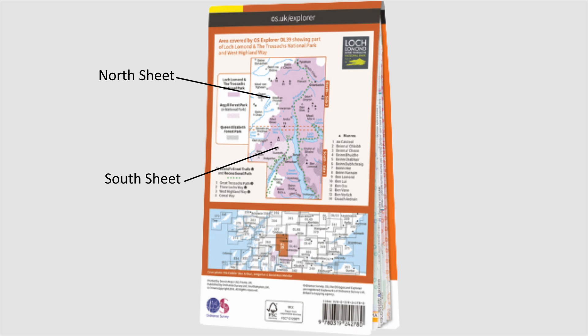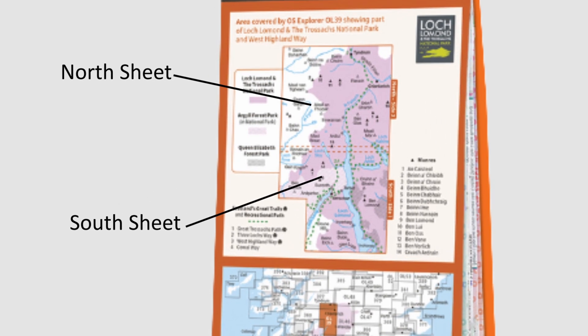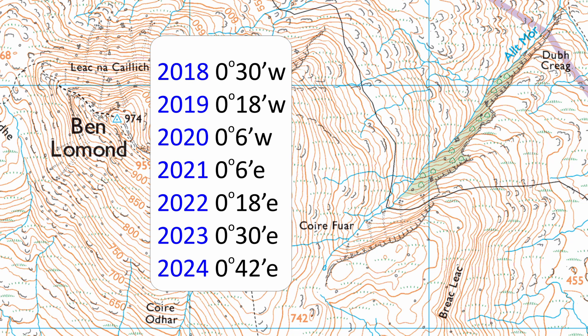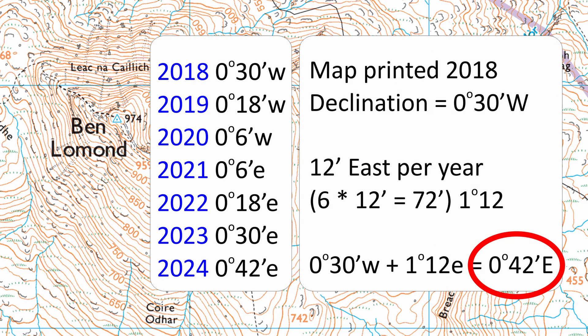The reason there are two slightly different magnetic norths and true norths on this map is simply because there's printing on both sides of the paper. This map was printed six years ago and the estimation was that the declination would increase by 12 minutes east each year, so that's 72 minutes in total — which is 1 degree 12 minutes. Adding that to the original declination of 0 degrees 30 minutes west gives an estimated declination for July 2024.